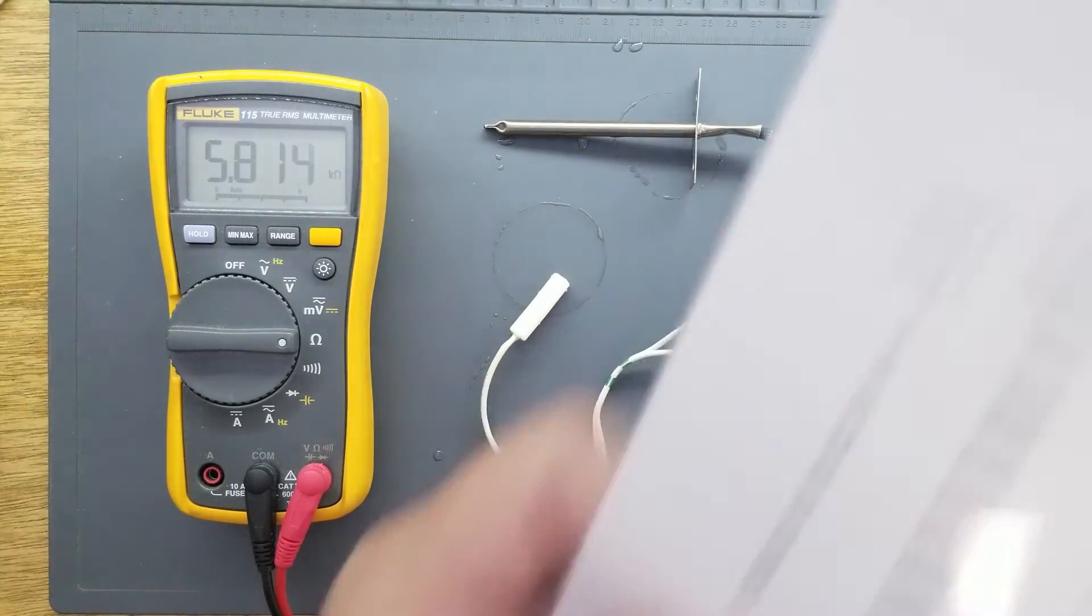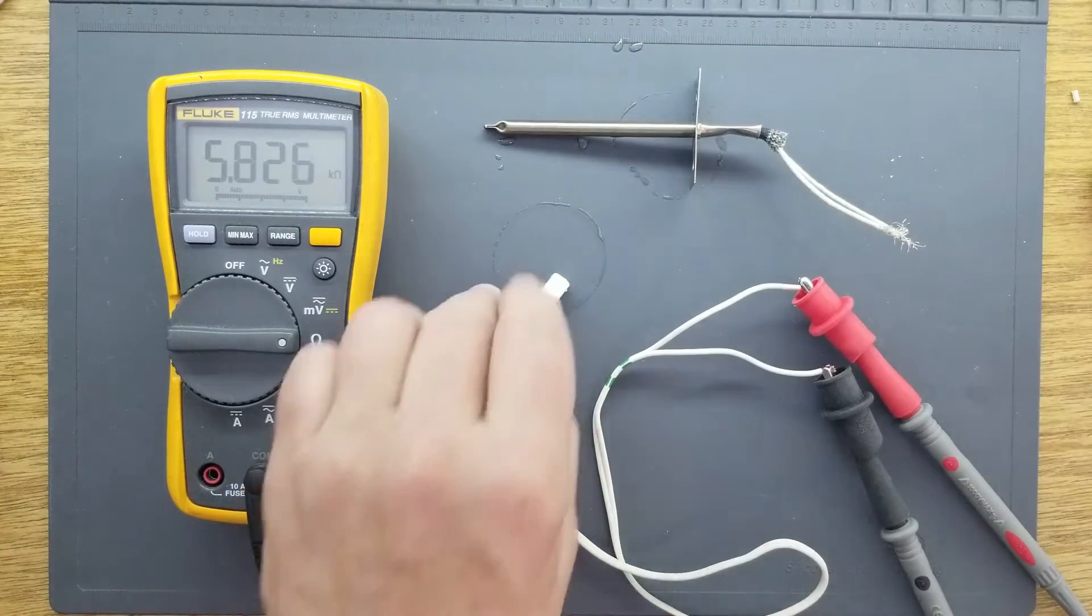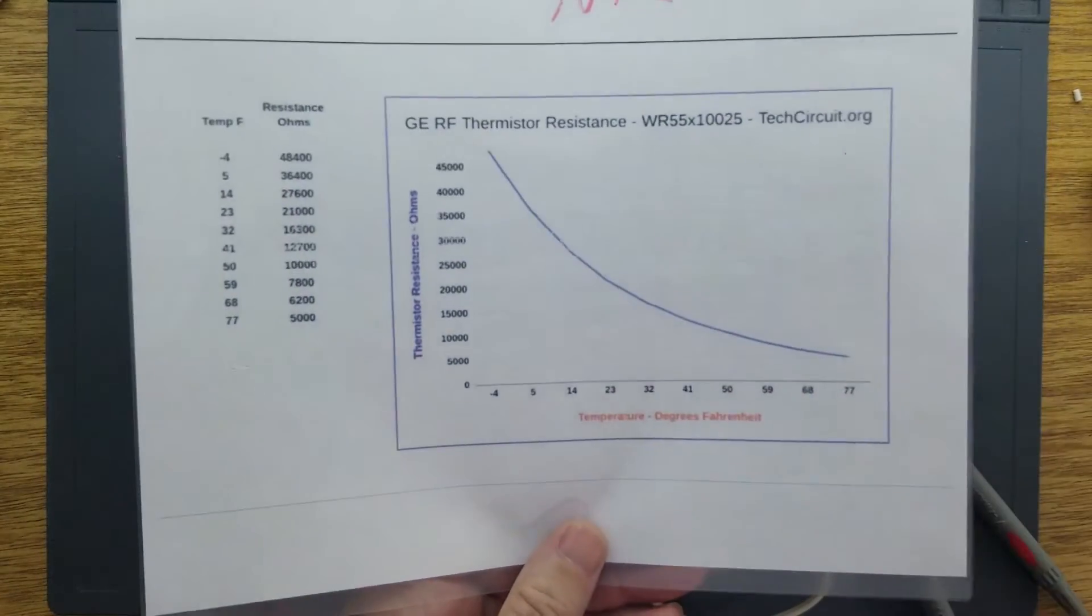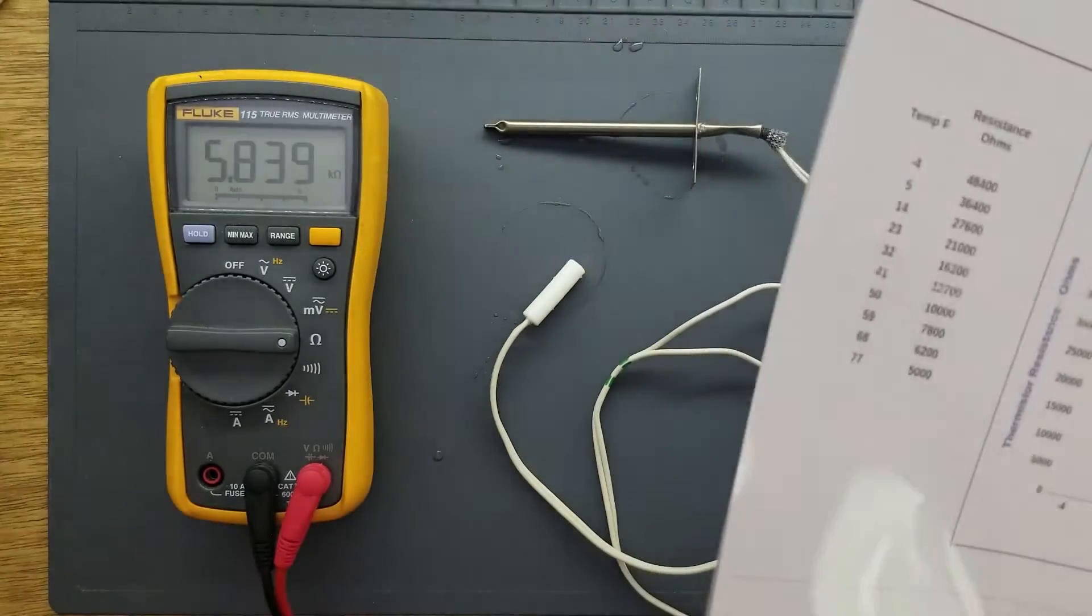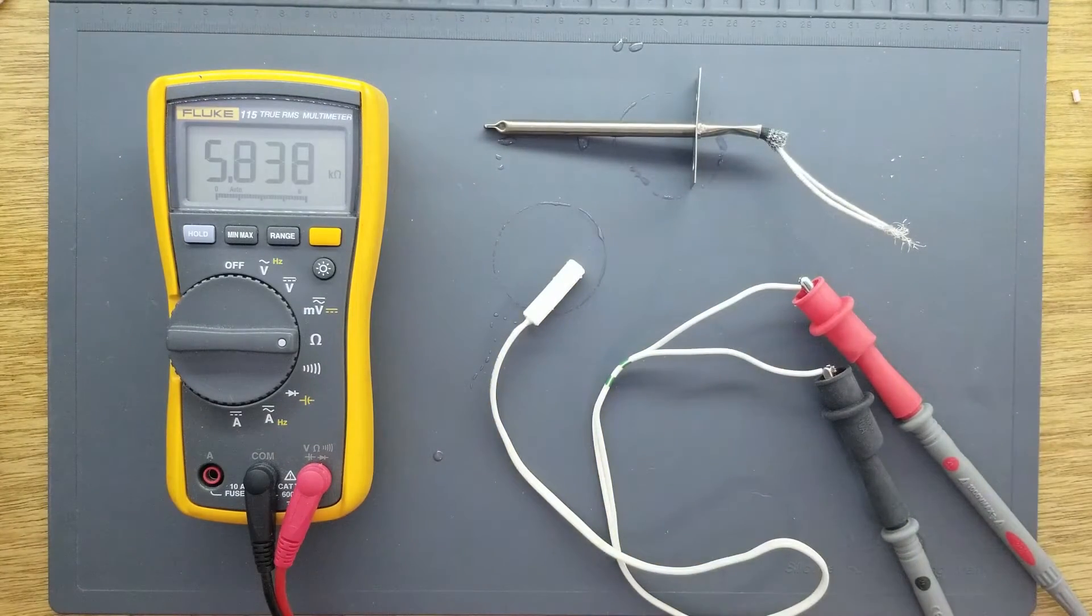Whereas this NTC refrigerator thermistor happens to have a nonlinear resistance curve. This has ramifications in how the information is processed.